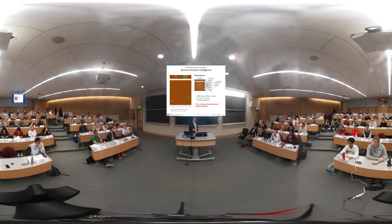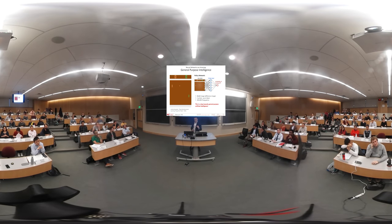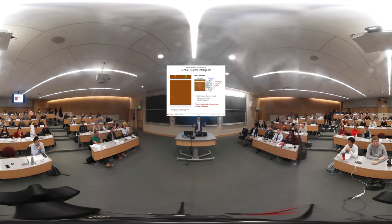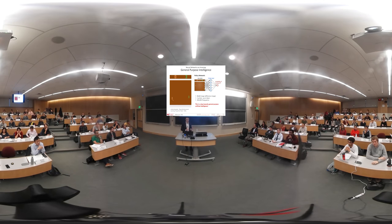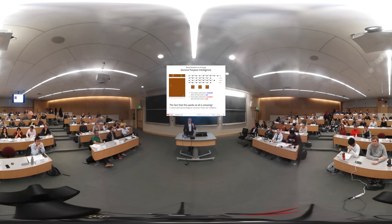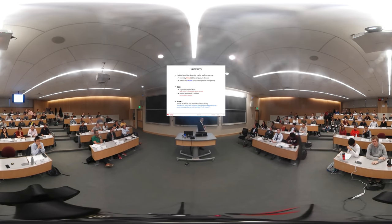This is general intelligence. We'll talk about special intelligence and useful applications, but this is general intelligence — the same intelligence we use as babies. When we're born, the only input we get is sensory input: images, sound, touch. We know nothing, and with that input we have to learn. Nobody pre-teaches us. This is an example of that truly working — systems that now outperform human beings in these simple arcade games. This is the research side of things.